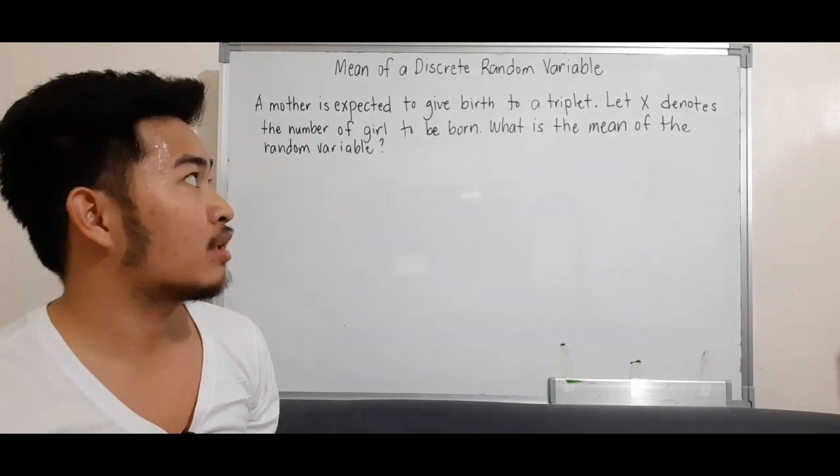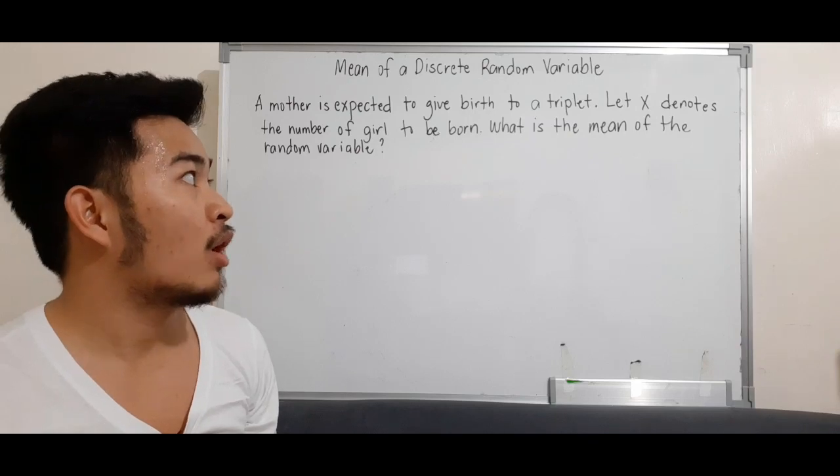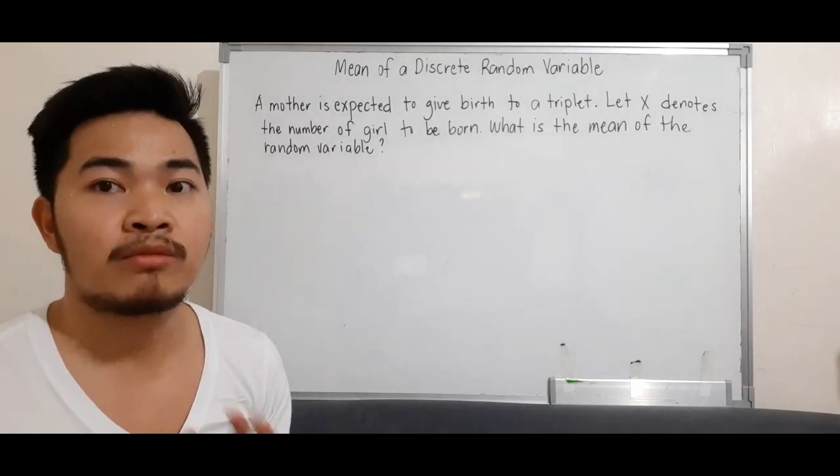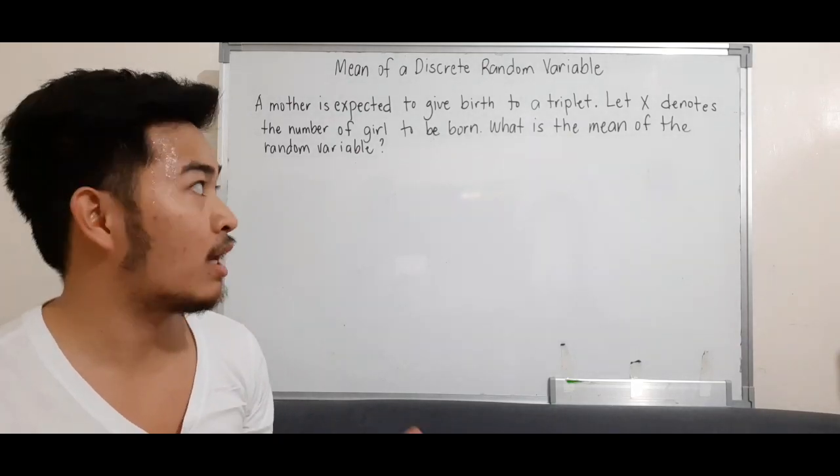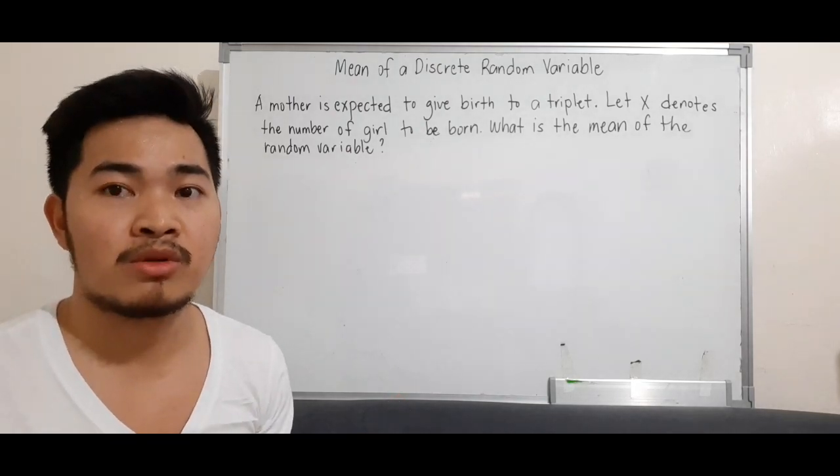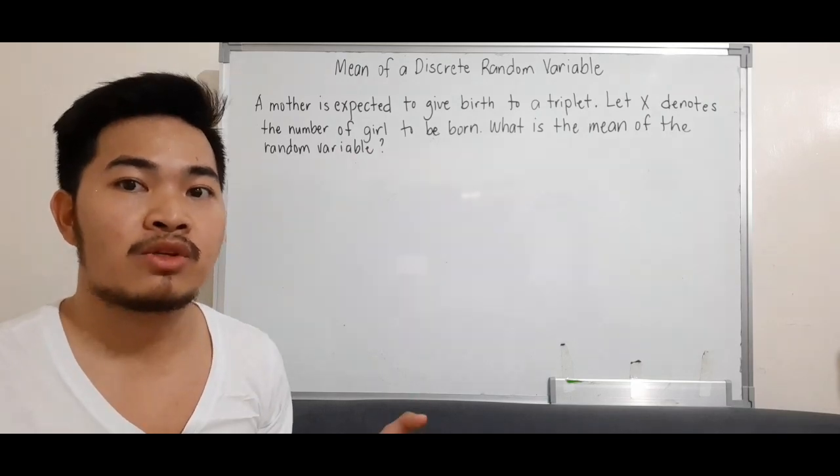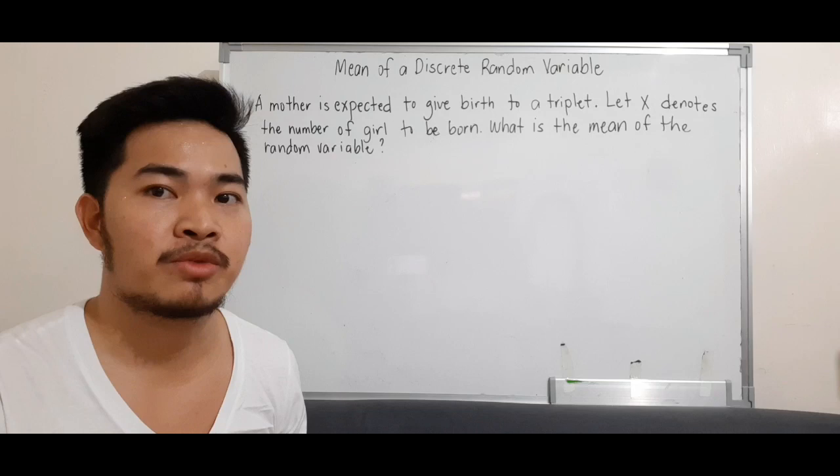Example number 2: A mother is expected to give birth to a triplet. Let x denote the number of girls to be born. What is the mean of the random variable? This time we don't have a probability distribution table, so we need to create one first. That lesson is in the video description below.